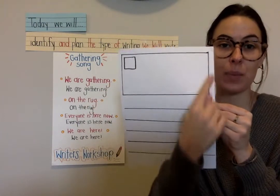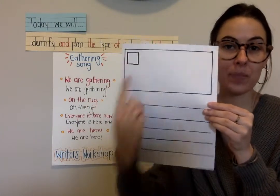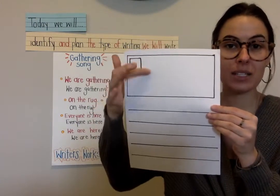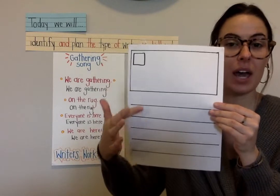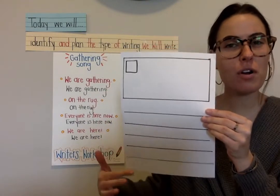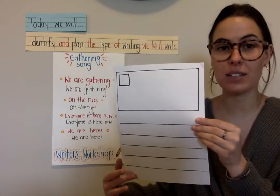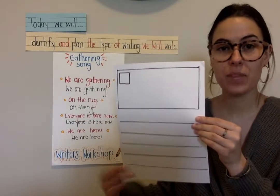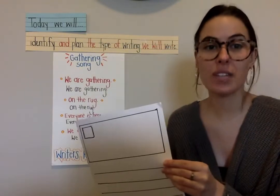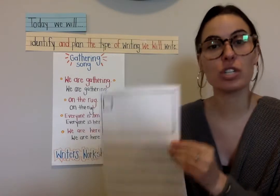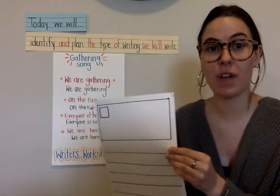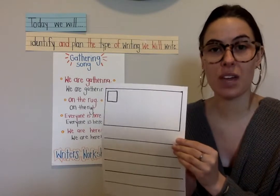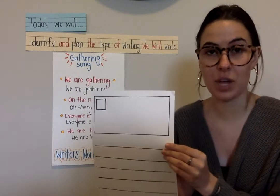So you'll just have a box at the top, a box in the corner, and about four or five lines. You can do this after the video. Just have a piece of paper ready, and I'll show you this again after the video.